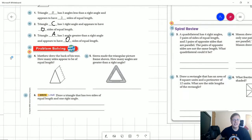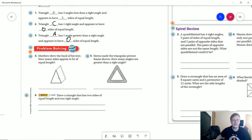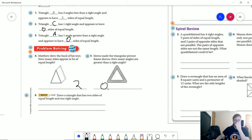Number four, how many sides appear to be of equal length? This shape would have two. For number five, how many angles are greater than a right angle? All of these would be smaller, so that would be zero.